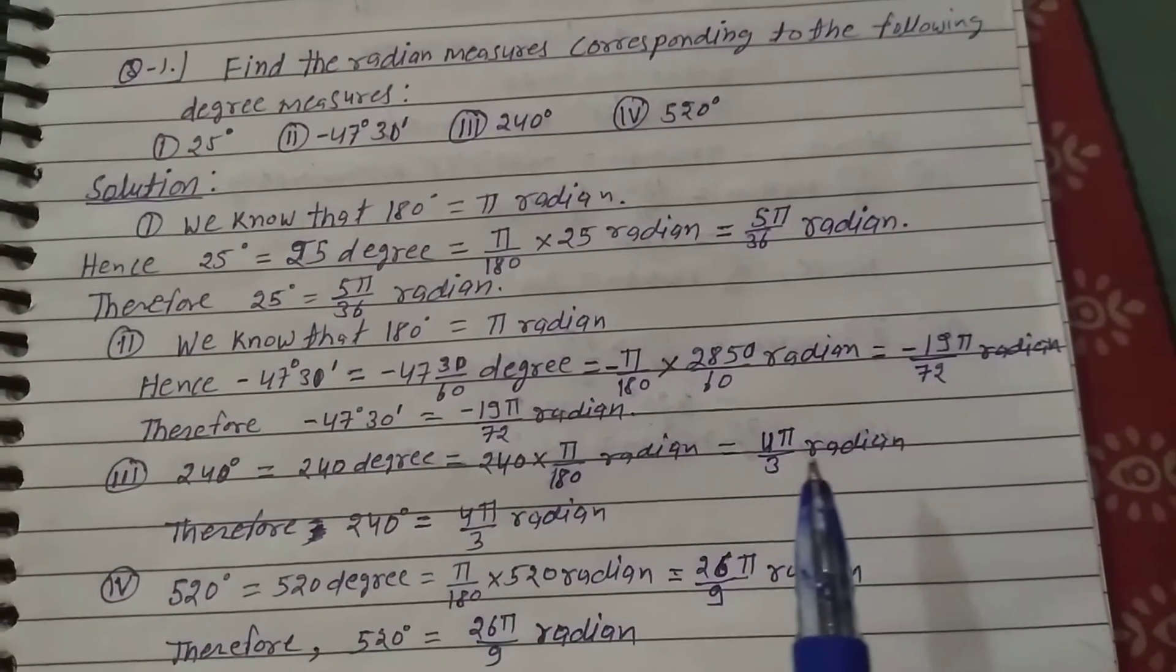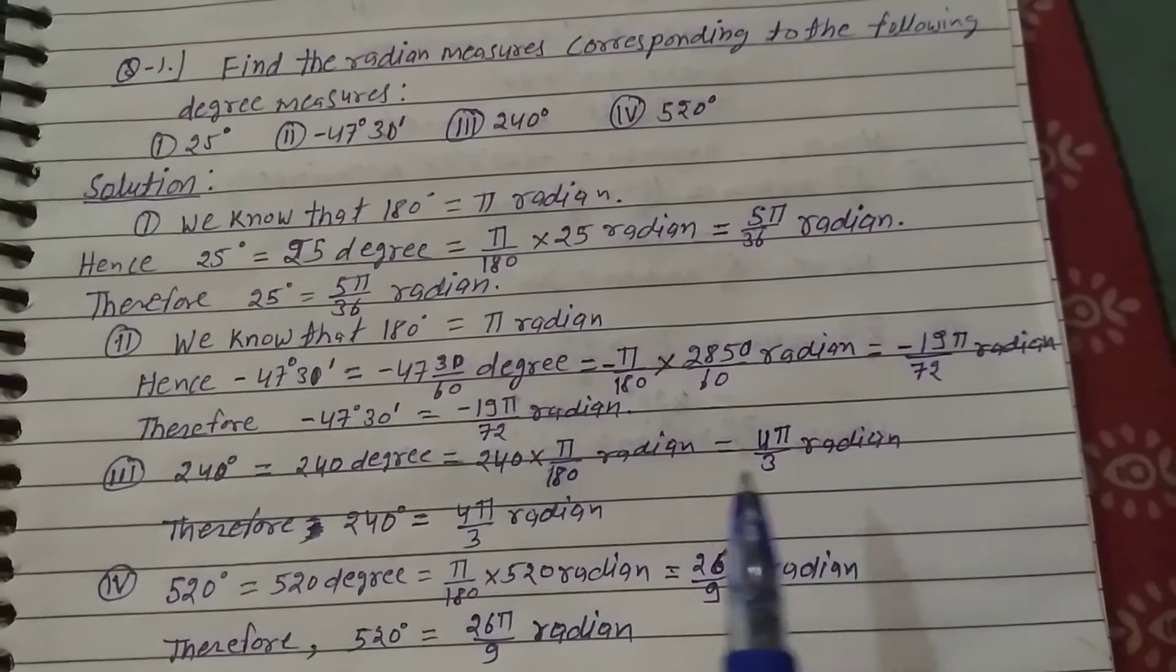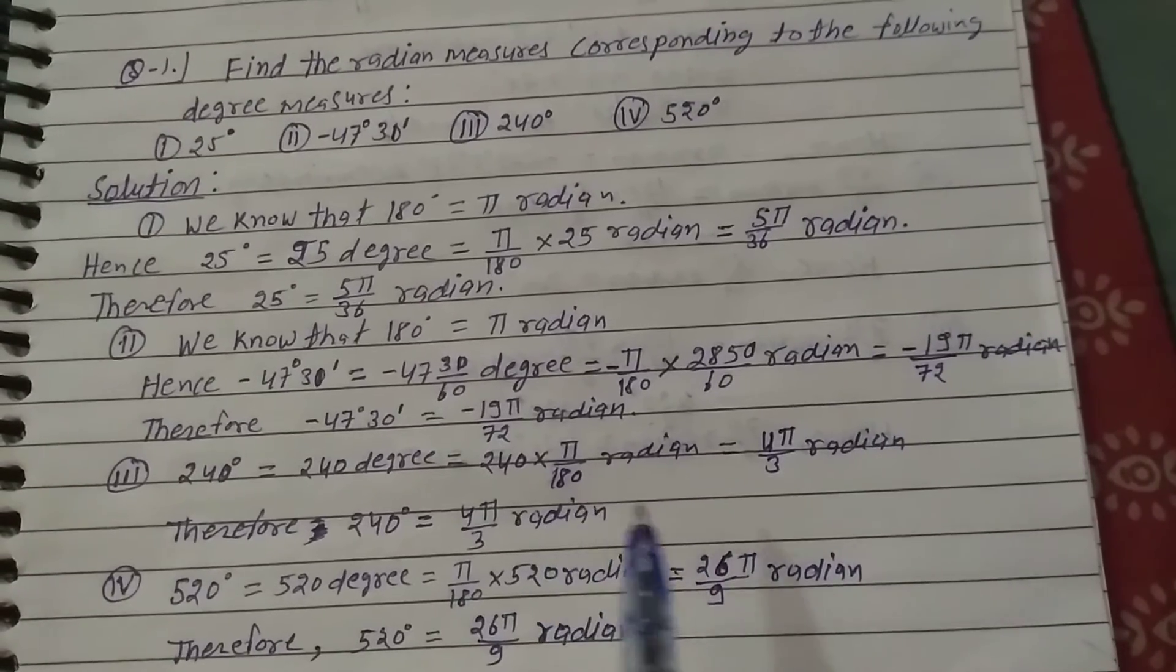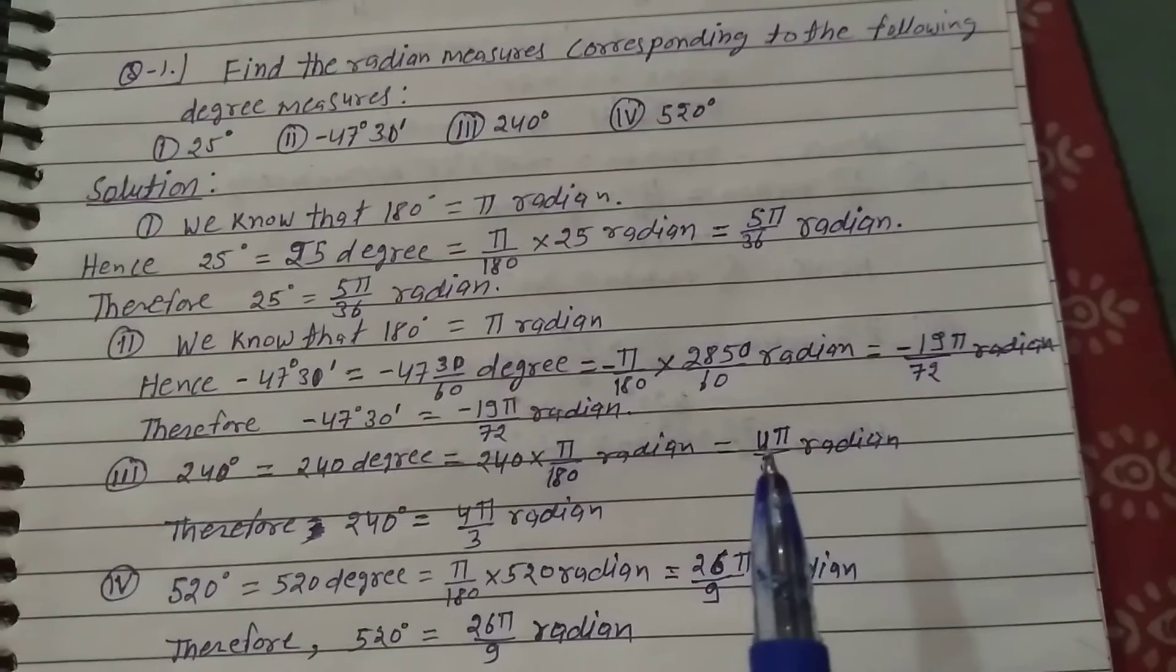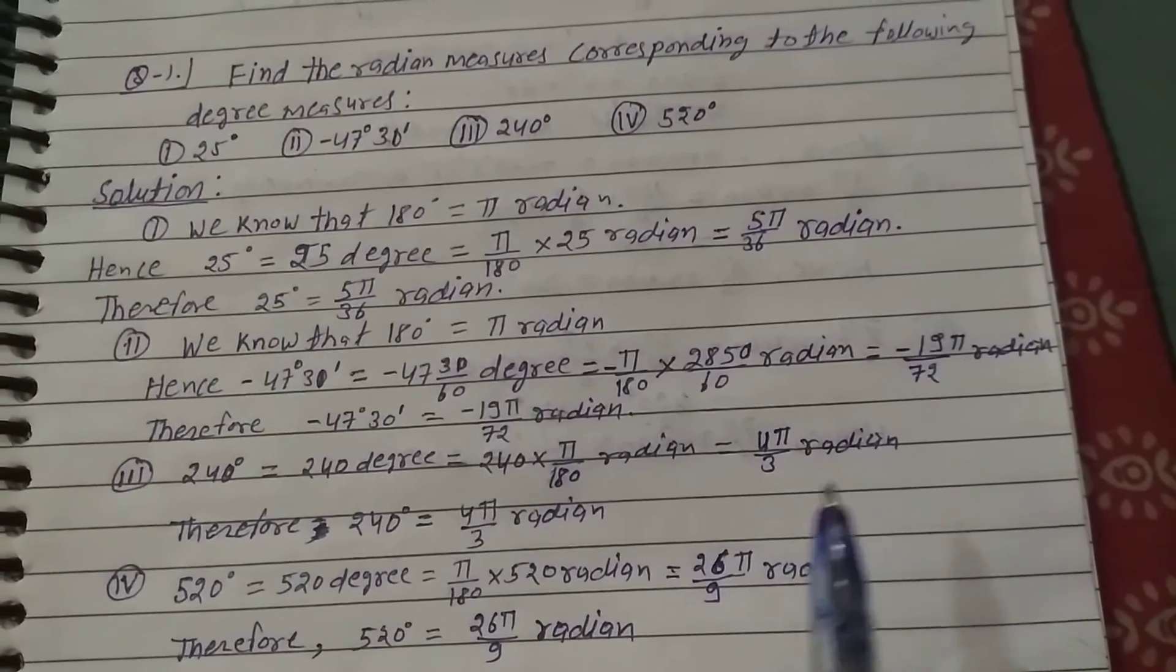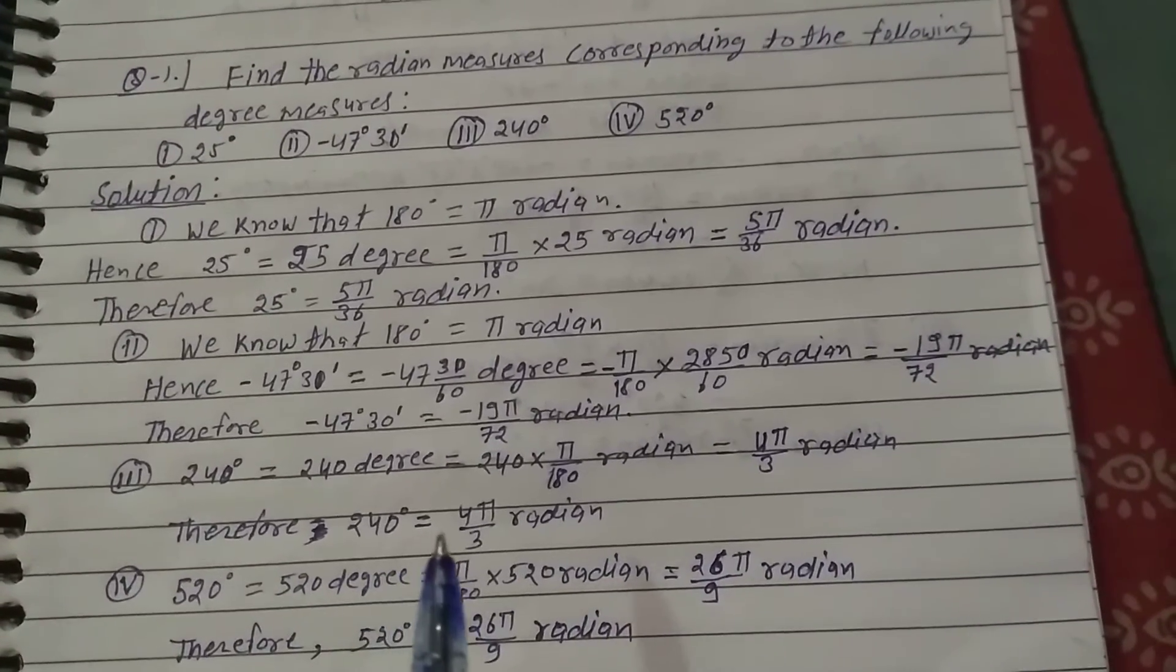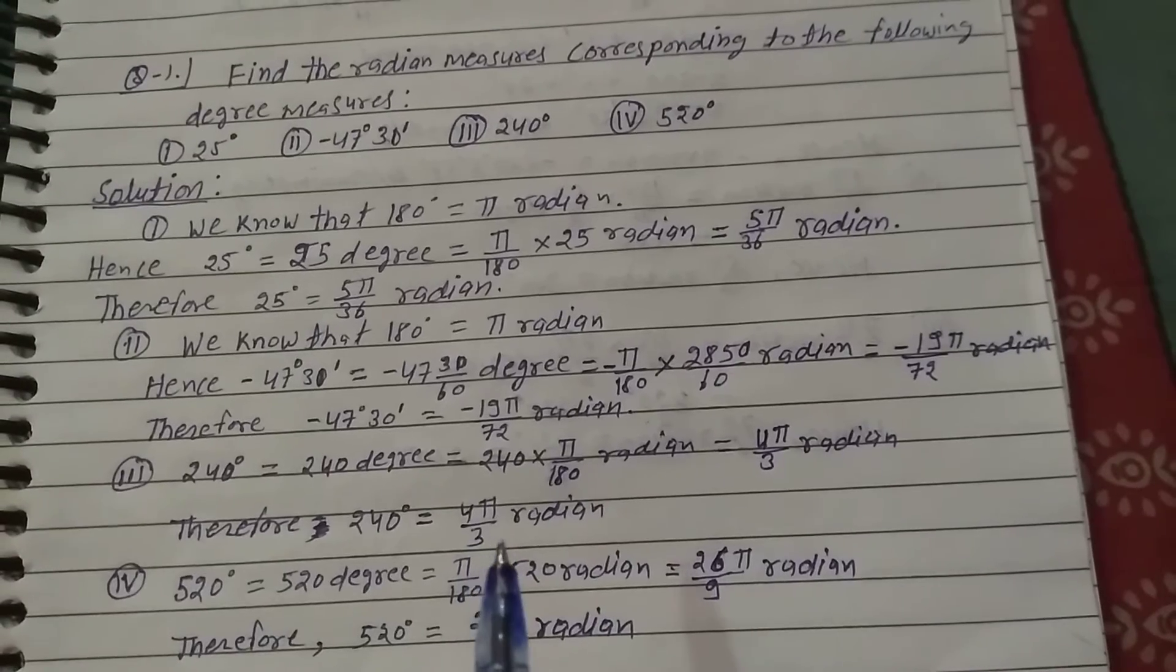Simplifying to the minimum form, we get 4π/3 radians. Therefore, 240 degrees equals 4π/3 radians.